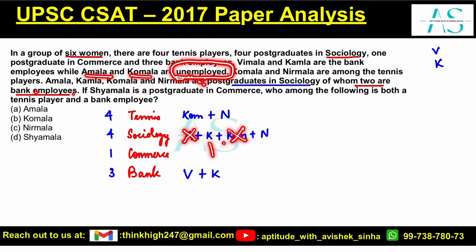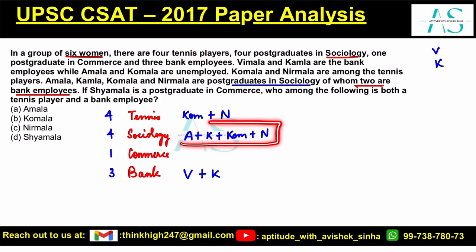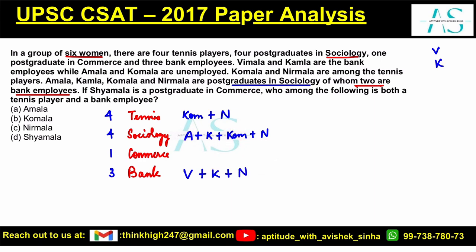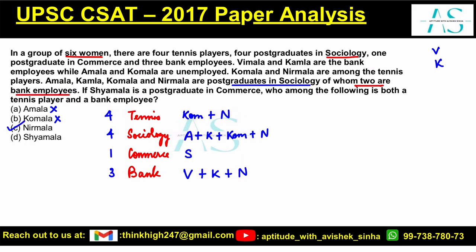Amala and Komala — yes, Kamala confirmed. Now let's see what is being asked: who among the following is both a tennis player and a bank employee? Since bank employees are given, can Amala or Komala qualify? No, because these two are unemployed, so you can cancel them out right away. You basically need to find what is common between the two groups — and what you see as common is N, which stands for Nirmala. So Nirmala is our correct answer.